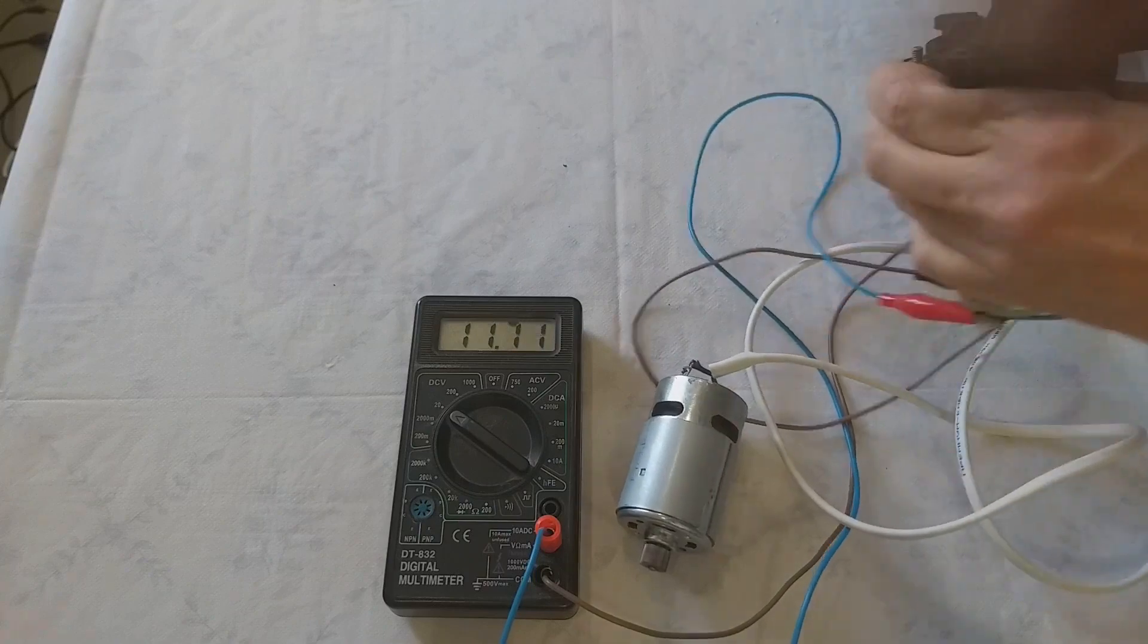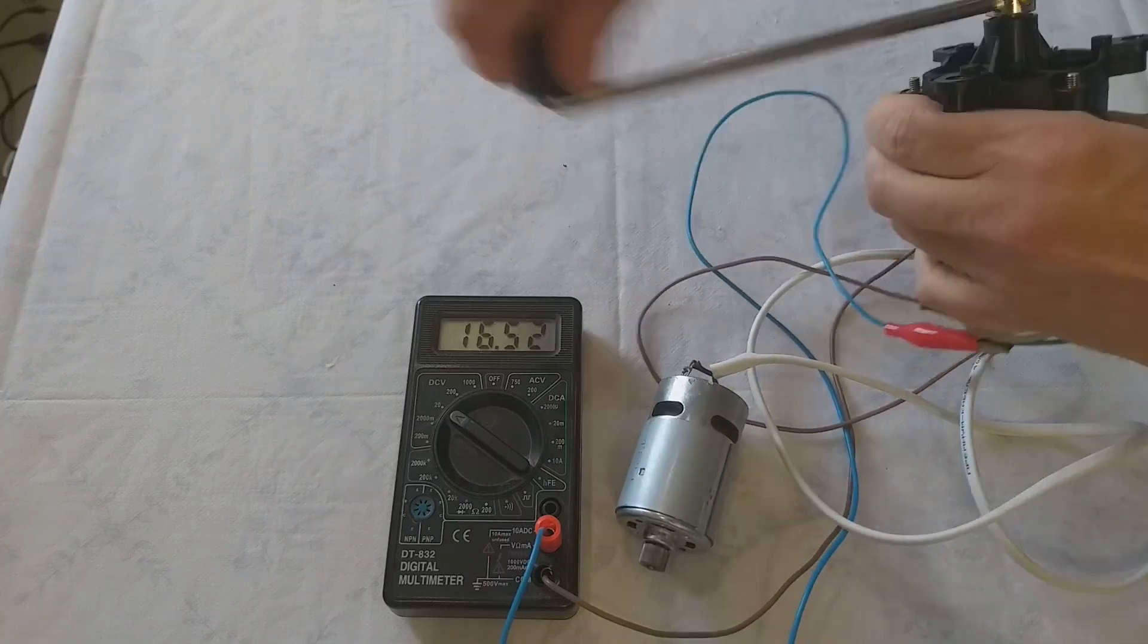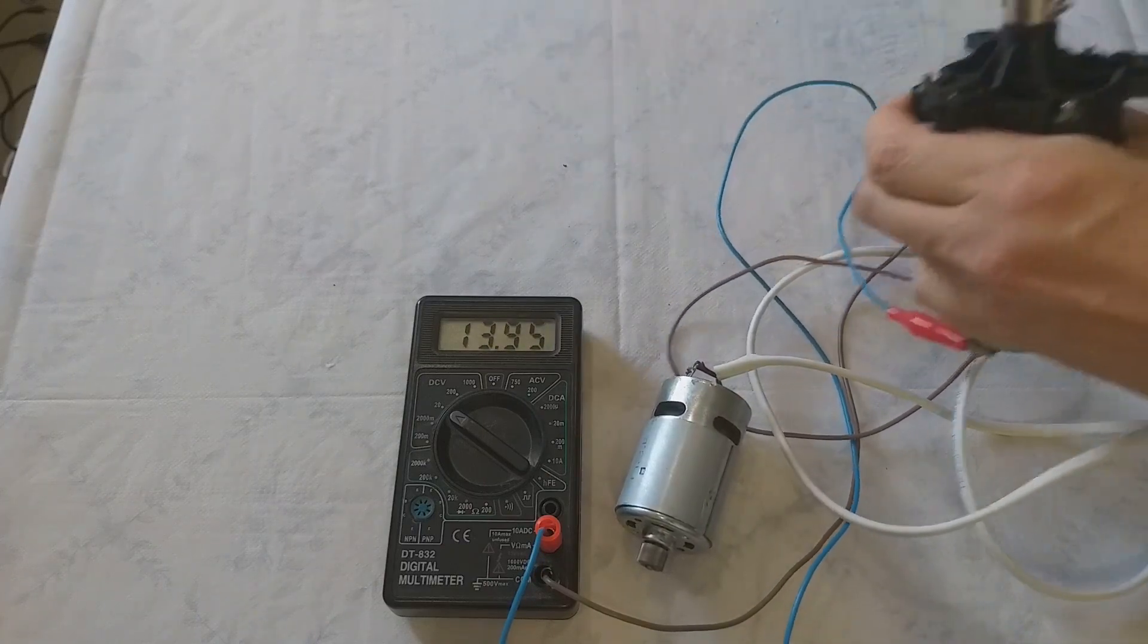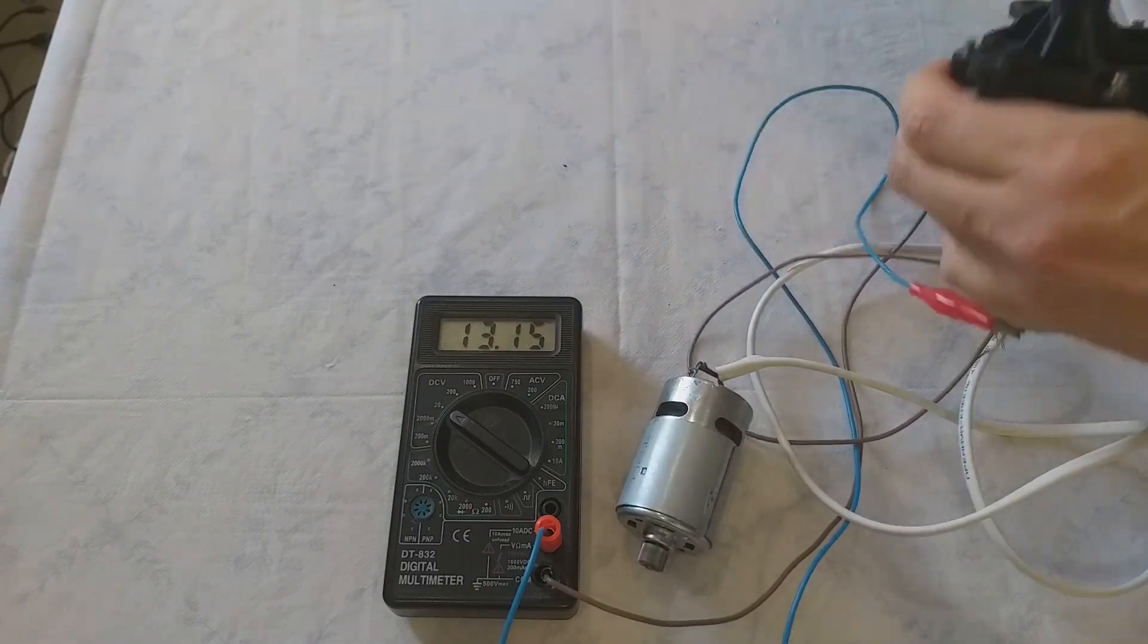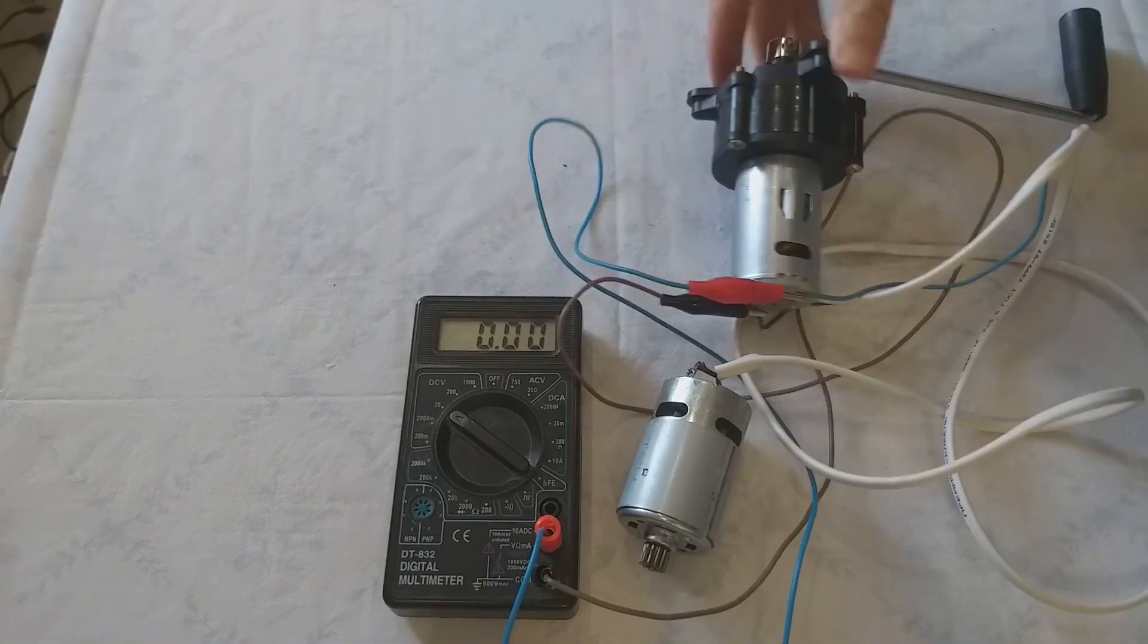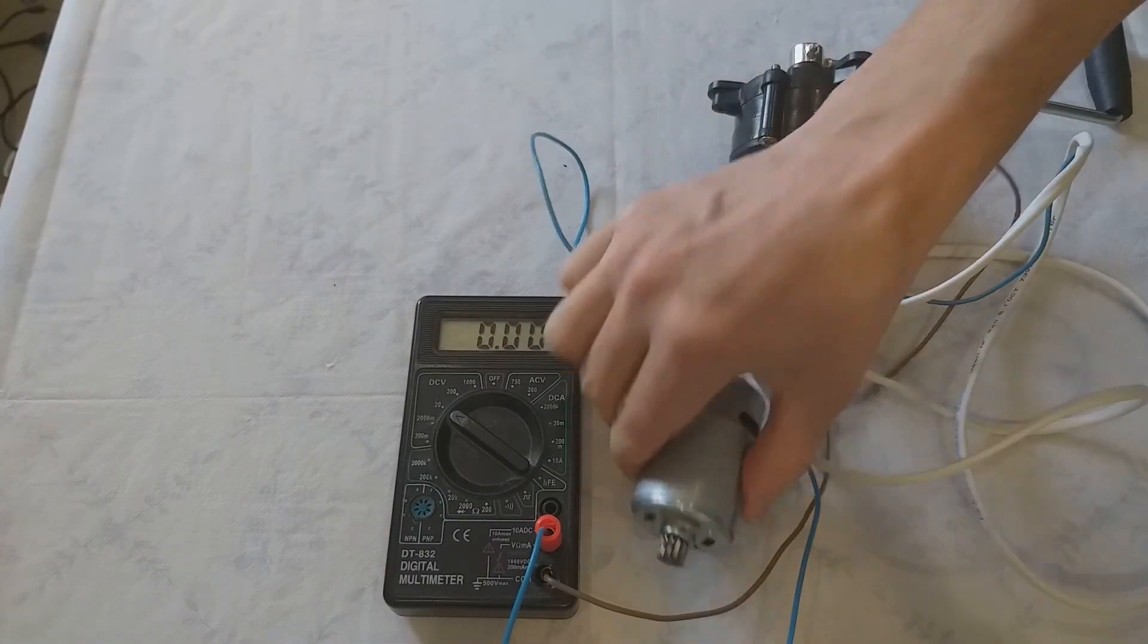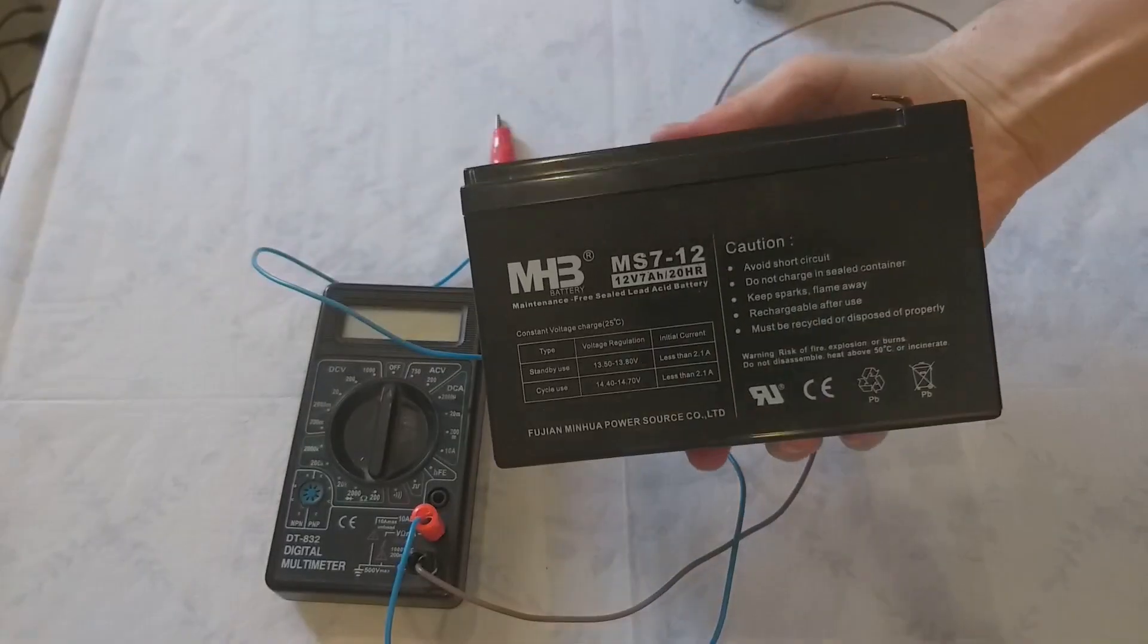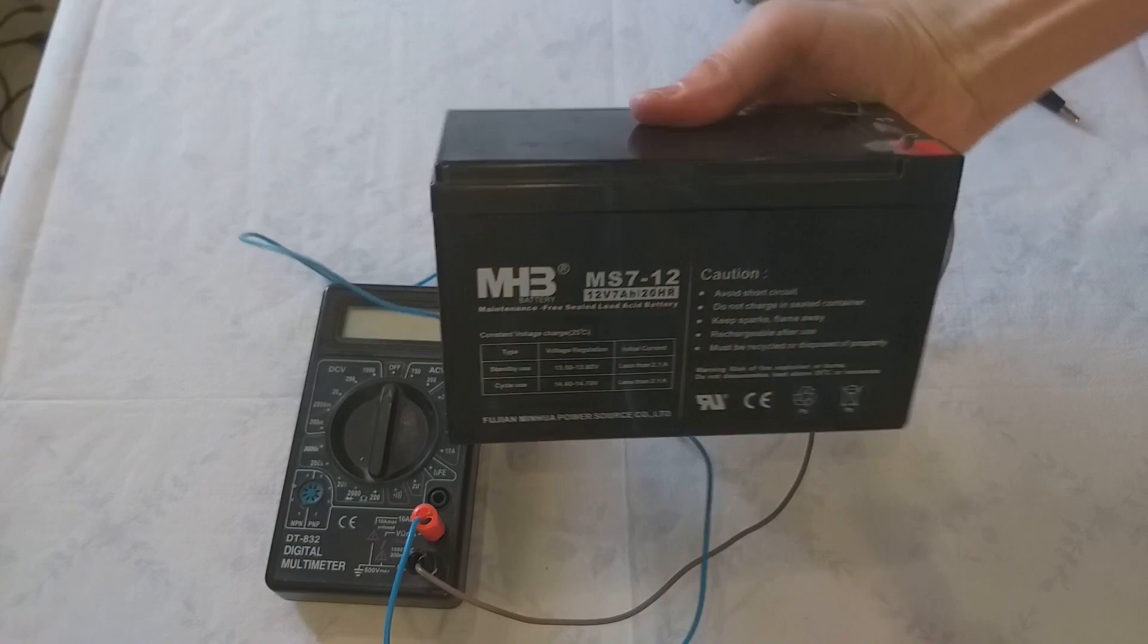I start to rotate the handle. Voltage is going down. The engine works faster. The engine from the generator works well. I have a 12-volt battery.